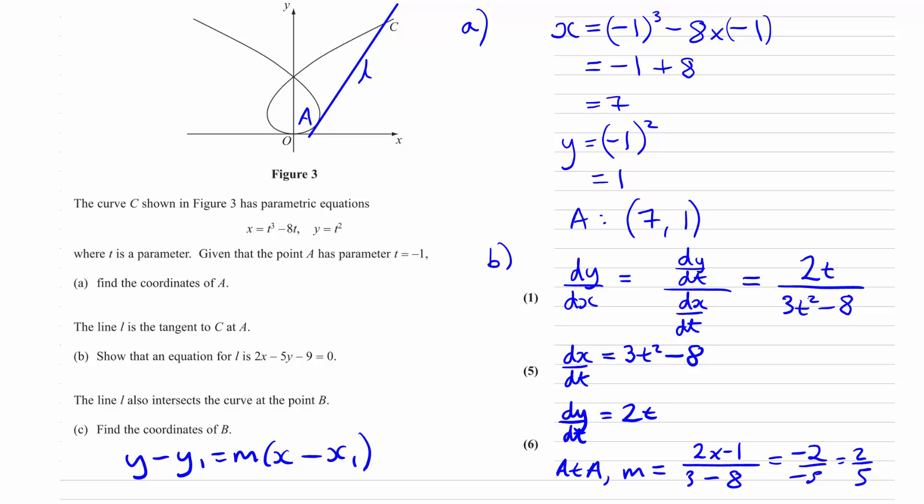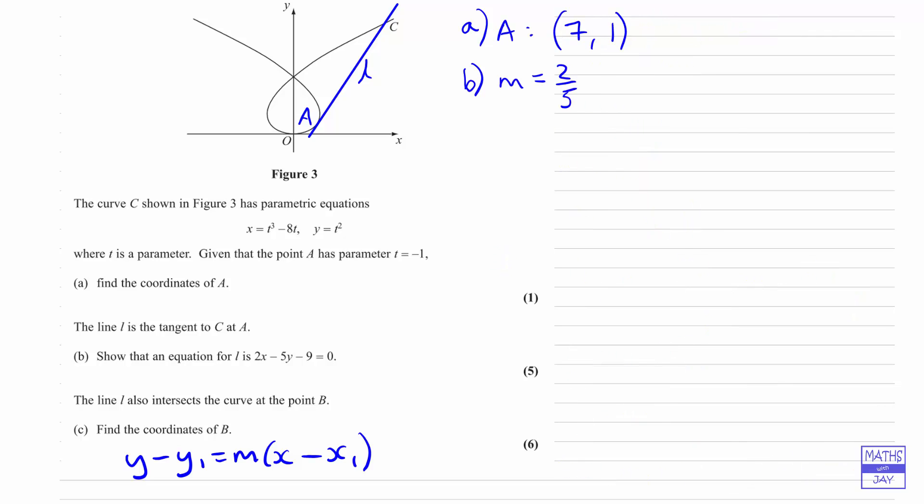Let's give ourselves more space. We can see the point and gradient clearly. Substituting into the formula: y minus 1 equals m times x minus 7. Now we need to multiply this out, rearrange it, and hope to get the given equation.